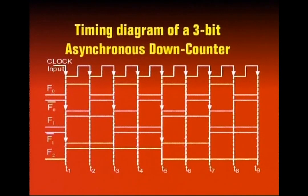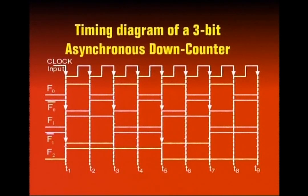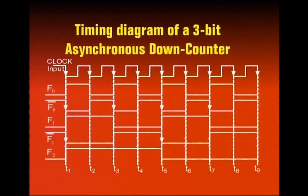At T5 interval, the clock input transitions high to low on the first flip-flop. F0 output goes from low to high, F0-bar goes high to low. This causes the second flip-flop's clock to have a high-to-low transition, so it changes its state — F1 was 0, it becomes 1. Because F1-bar goes from 1 to 0, that is a high-to-low transition on the third flip-flop's clock input, so the third flip-flop also toggles from 1 to 0. Following T6, T7, T8, T9, states continue changing on each high-to-low transition.